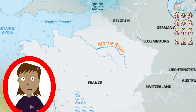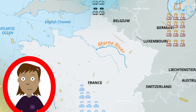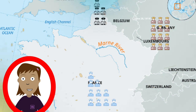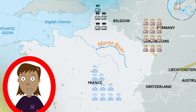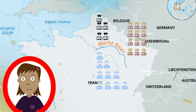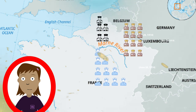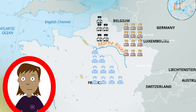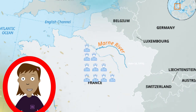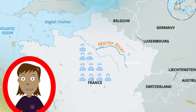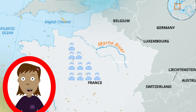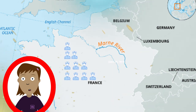Major battles and fronts — the Western Front. Battle of the Marne, September 6–12, 1914: this battle took place near the Marne River, just outside Paris. The French and British forces halted the German advance, leading to trench warfare that would dominate the Western Front. Battle of Verdun, February 21 – December 18, 1916: one of the longest and costliest battles, fought in northeastern France.